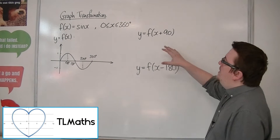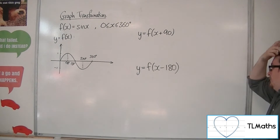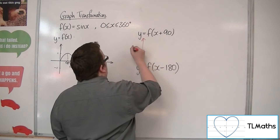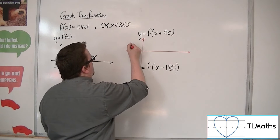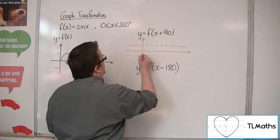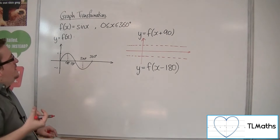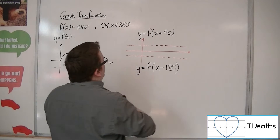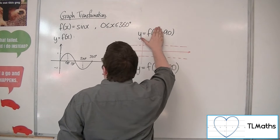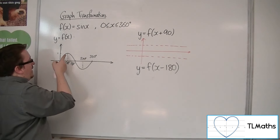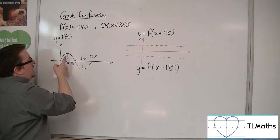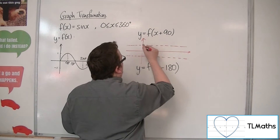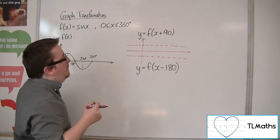Now we're going to investigate y equals f of x plus 90 and y equals f of x minus 180. So let's see what happens. If we draw in some axes and some guidelines for 1 and minus 1. Now when I put in the value of x is 0 into this, I get f of 90. When x is 90, I get a value of 1 in this graph, so f of 90 is 1. So when I'm putting 0 into this, I'm getting 1 — that is a point for my curve.